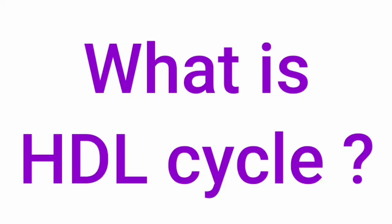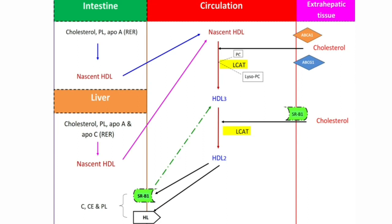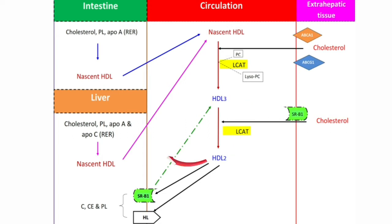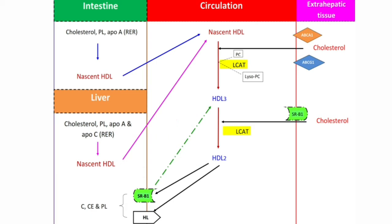What is HDL cycle? During the metabolism of HDL, the nascent HDL is converted into HDL3, and HDL3 is converted into HDL2. The reformation of HDL3 from HDL2 is called the HDL cycle.